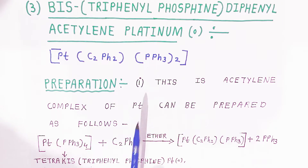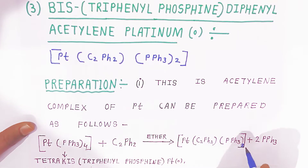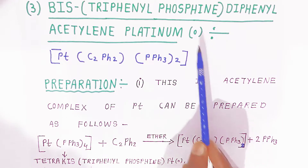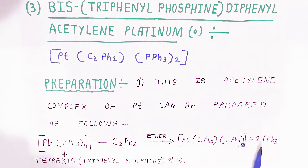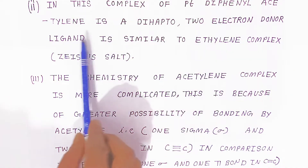For preparation, the raw material taken is tetrakis triphenyl phosphine platinum. When it reacts with diphenyl acetylene in the presence of ether, it gives bis triphenyl phosphine diphenyl acetylene platinum complex in zero oxidation state, along with two molecules of triphenyl phosphine.